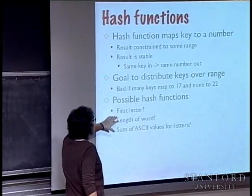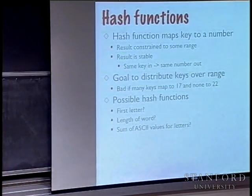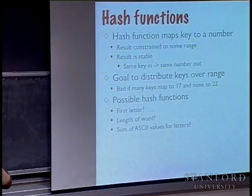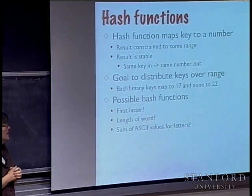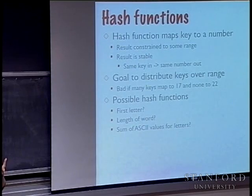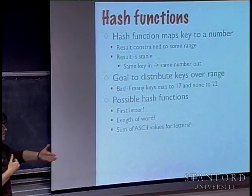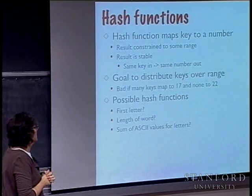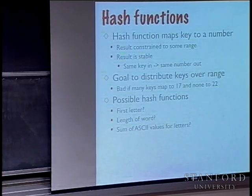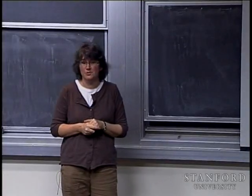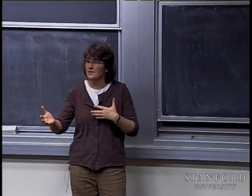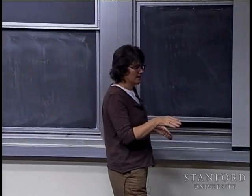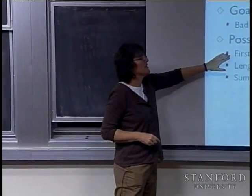Some simple hash strategies include using just the first letter of a word — that gives exactly 26 buckets. If you have 100 buckets, that's a poor function because only the first 26 would ever be used. Using word length is even worse — most strings cluster tightly around six to ten characters, leaving very few in the short or long ranges, so it wouldn't use a large bucket range effectively.